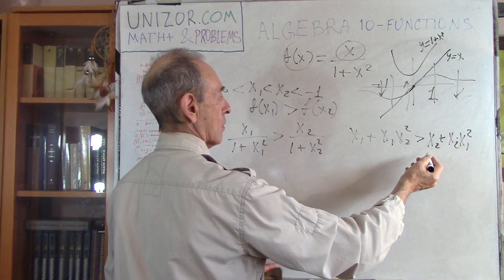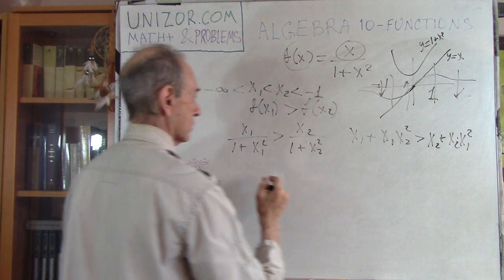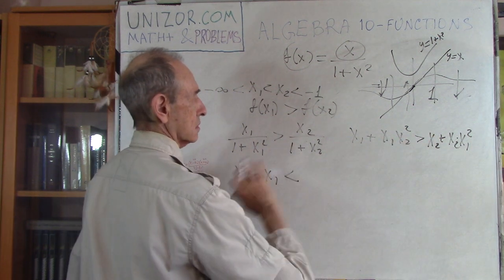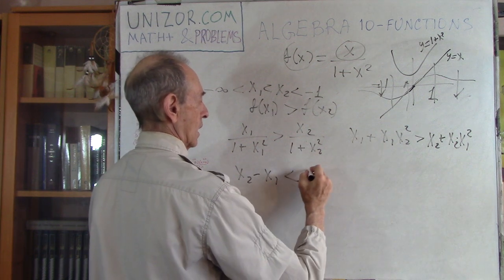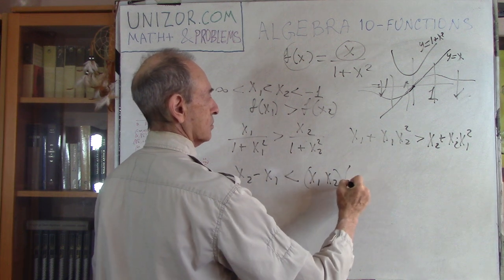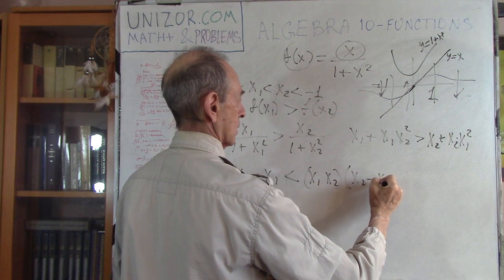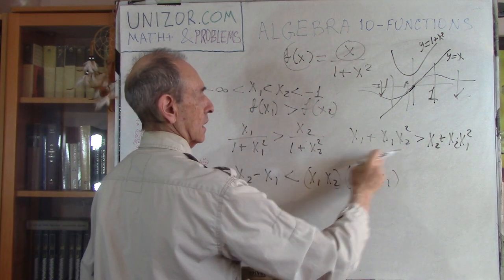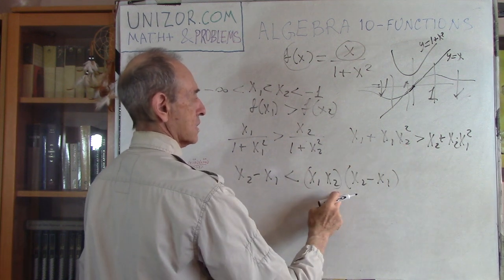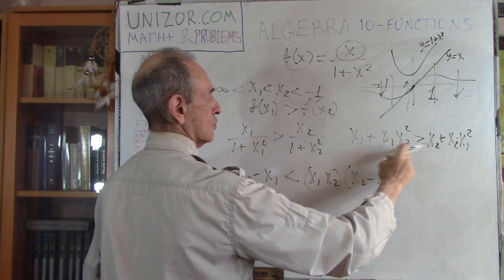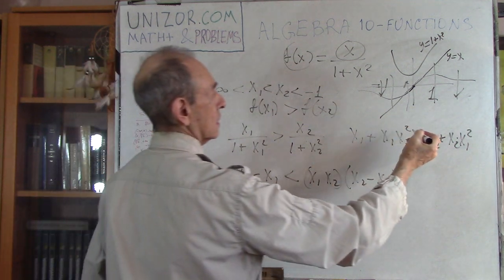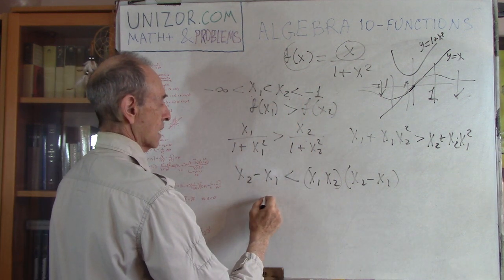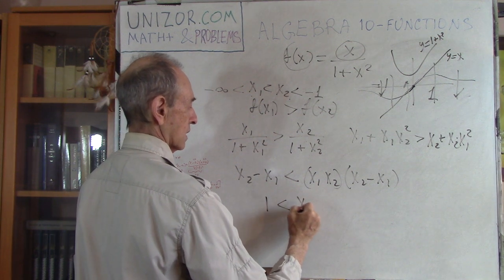Let's transform further. Take x2 to the right — it will be x2 minus x1, and the sign reverses. On the other side we factor out x1·x2, leaving x2 minus x1 in the parenthesis. Now x2 minus x1 is positive since x1 < x2, so we can divide both sides by it and get 1 < x1·x2. Both x1 and x2 are negative and by absolute value greater than one — they are less than minus 1 — so their product is positive with absolute value greater than one, making the inequality obviously true.